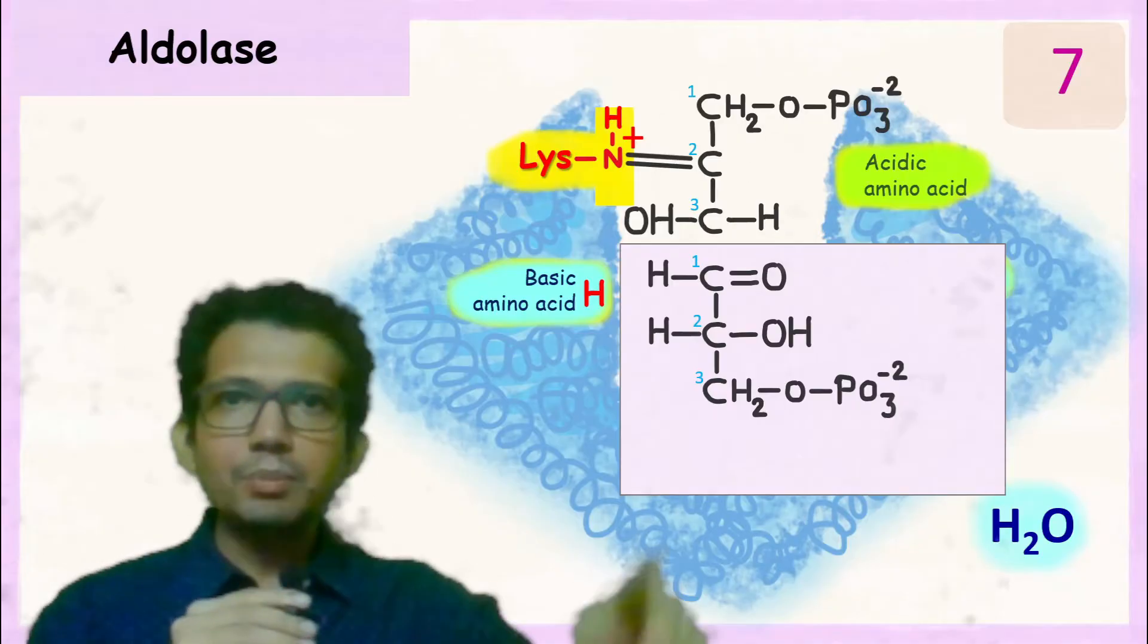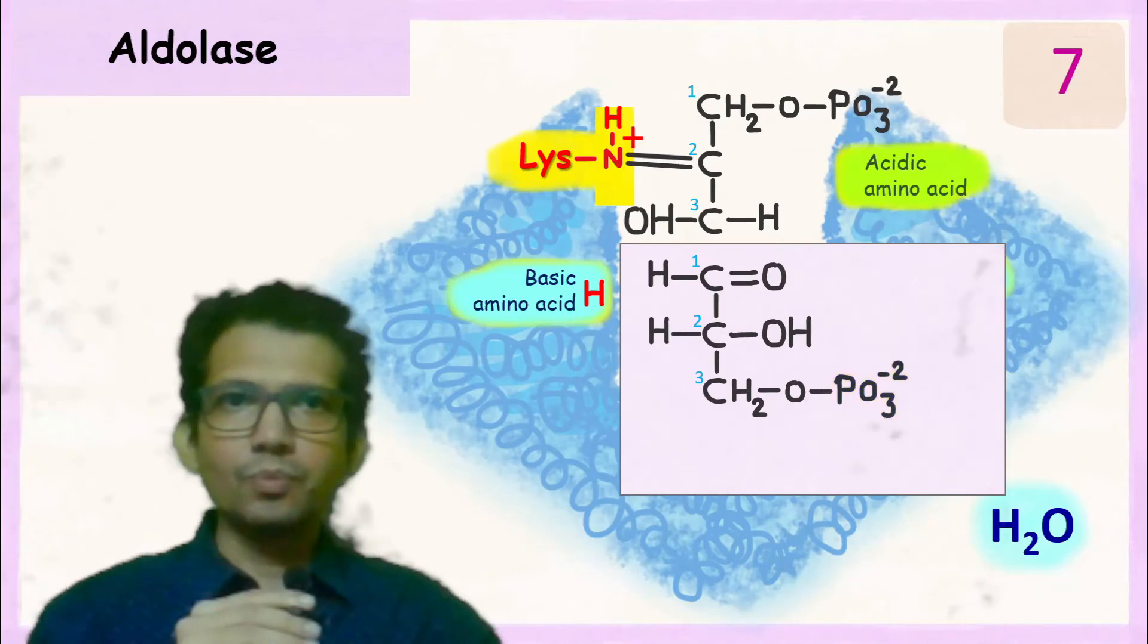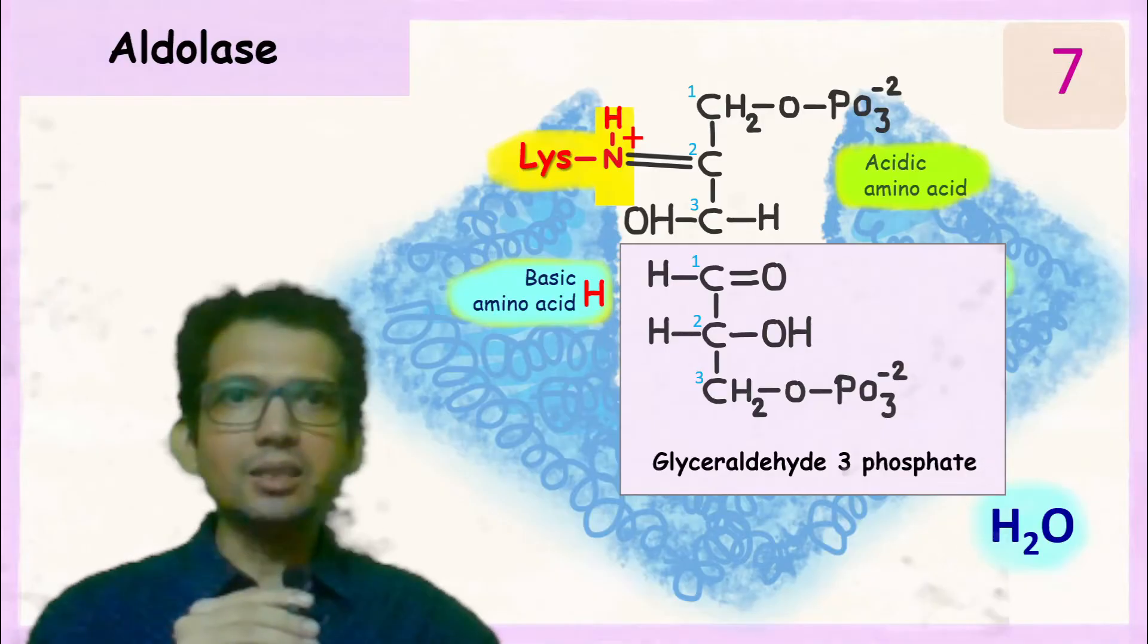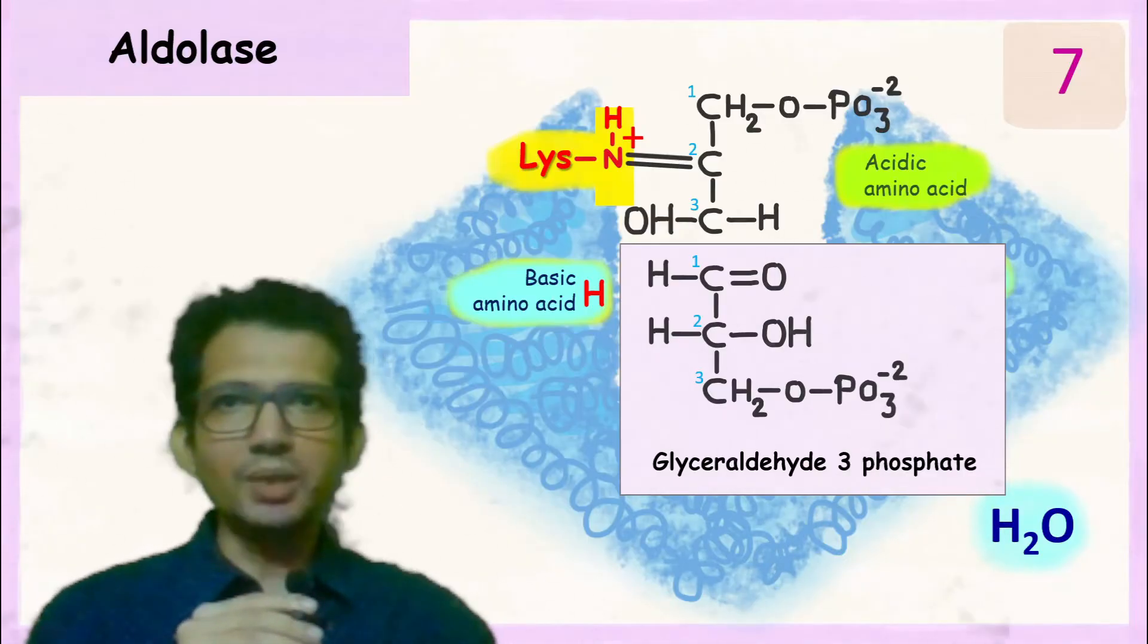The third carbon has the presence of phosphate. So the product so formed is glyceraldehyde-3-phosphate. This glyceraldehyde-3-phosphate is released from the enzyme.